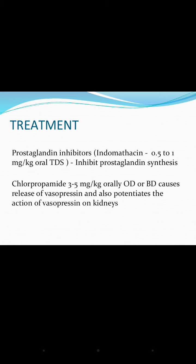Prostaglandin inhibitors block the action of prostaglandins in the renal collecting tubules and enhance the activity of antidiuretic hormone. Indomethacin is given at 0.5 to 1 milligram per kg orally three times daily. Chlorpropamide is given at 3 to 5 milligrams per kg orally; it causes the release of vasopressin and potentiates the action of vasopressin on the kidneys.